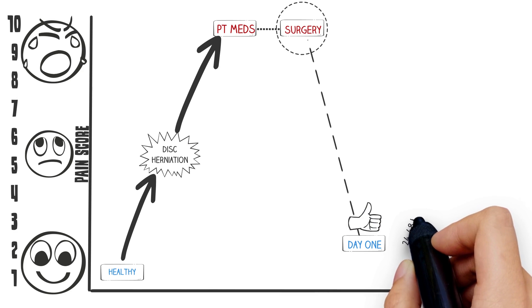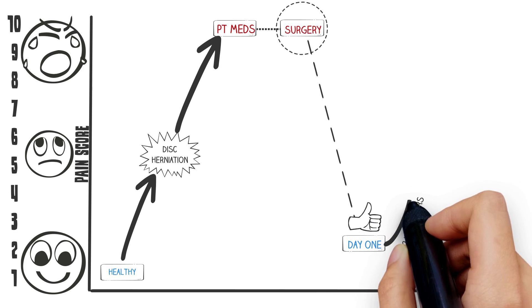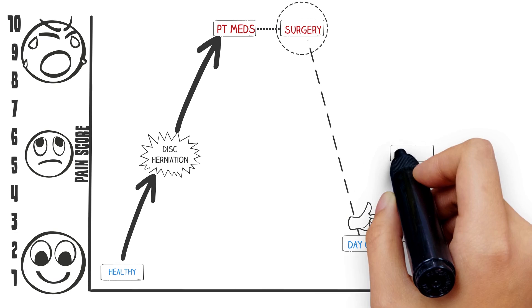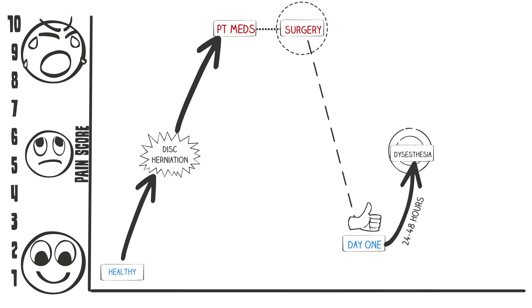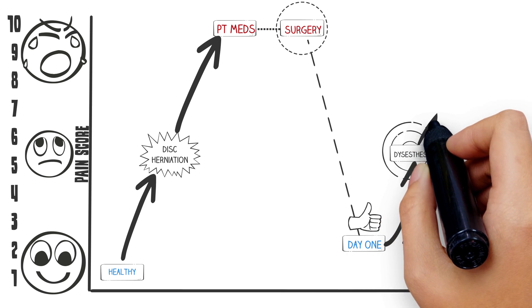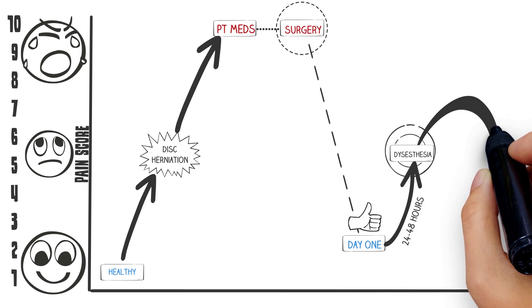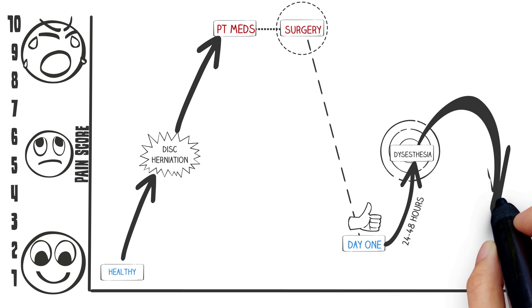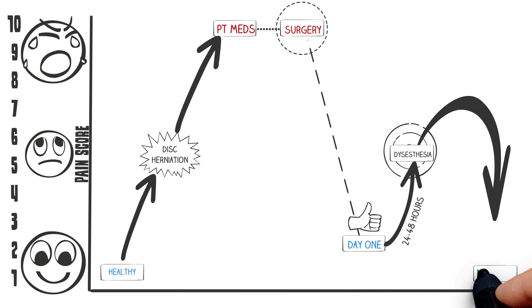24 to 48 hours later, increased blood flow to the dorsal root ganglion causes temporary swelling, and the pain may return. As the nerve continues to heal, the swelling comes and goes, but ultimately, the nerve root returns to normal, and the patient is happy.